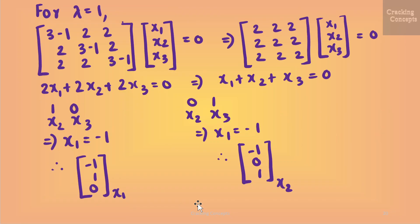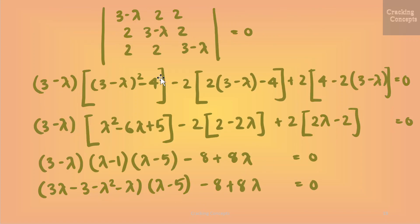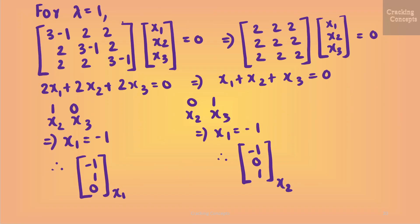Now I will find the eigenvectors by taking each eigenvalue and substituting it into the standard format. For lambda = 1, I get the equation x1 + x2 + x3 = 0. Taking x2 and x3 with different combinations of (1, 0) and (0, 1), for both cases I get x1 = −1. So the first eigenvector x1 is [−1, 1, 0] and the second eigenvector x2 is [−1, 0, 1].